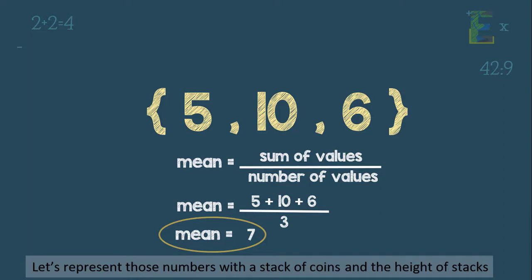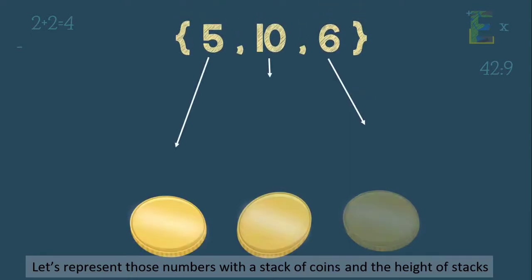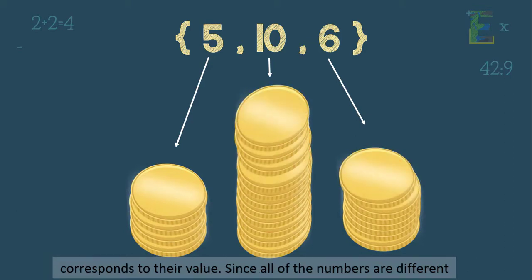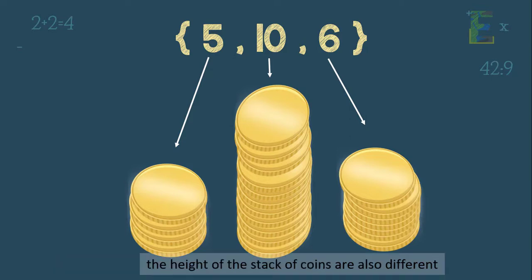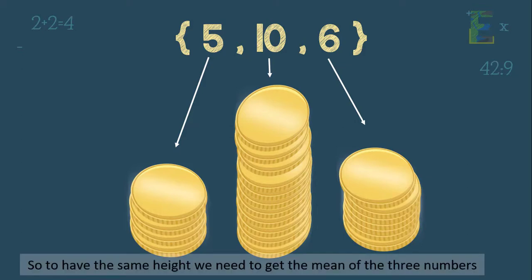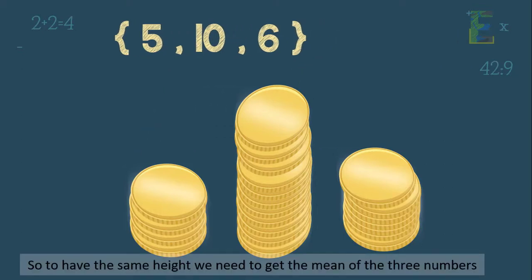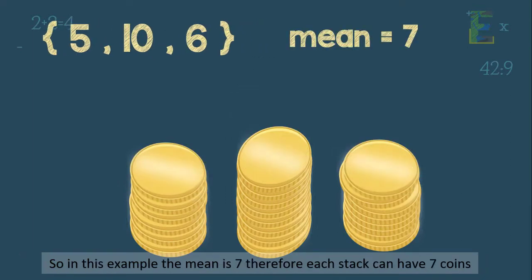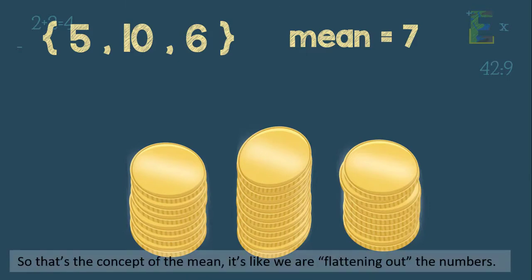To visualize it, let's represent those numbers with a stack of coins and the height of stacks corresponds to their value. Since all of the numbers are different, the height of the stack of coins are also different. So to have the same height, we need to get the mean of the three numbers. So in this example, the mean is 7. Therefore, each stack can have 7 coins. So that's the concept of mean. It's like we are flattening out the numbers.